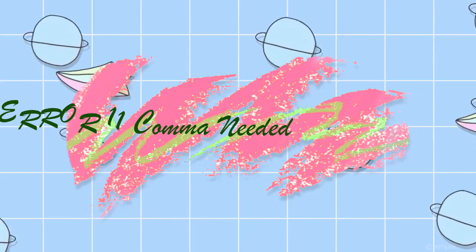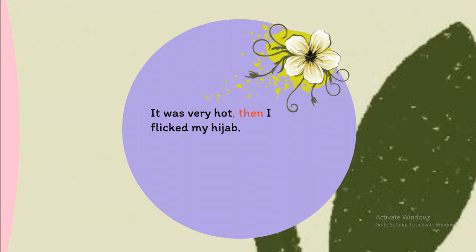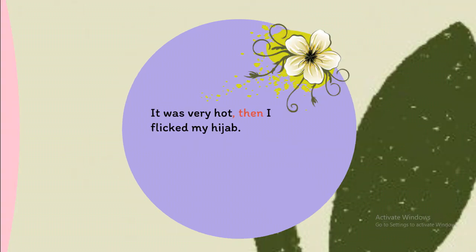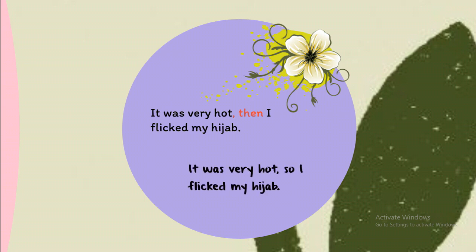Error 11: Commas needed. Example: 'It was very hot. Then I flicked my hijab.' These two sentences relate to each other — 'it was very hot' is the cause, and 'I flicked my hijab' is the effect. The transitional word 'so' is more suitable to show the relationship between the two events. This sentence should be: 'It was very hot, so I flicked my hijab.'